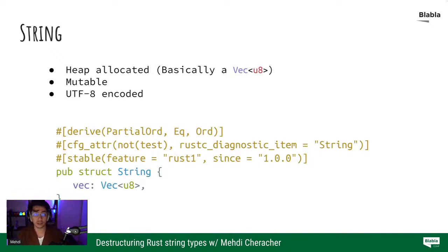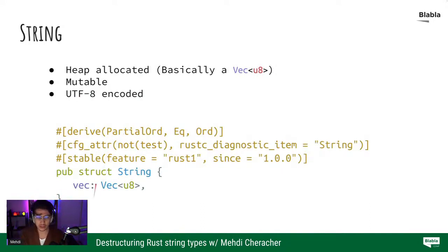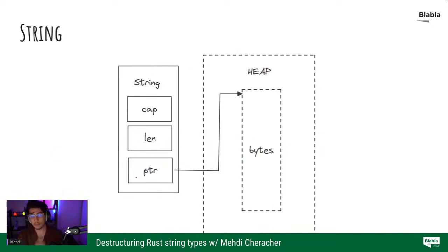It's a mutable type, and it's valid UTF-8 encoded. One of the things that makes it a String type — looking at the declaration from the standard library source — you can see it's just a struct String that references a vector. So we mainly have UTF-8 encoded bytes. That's all the string is. It's the most common string type and it's used everywhere.